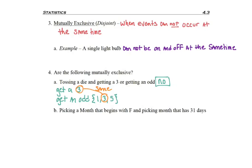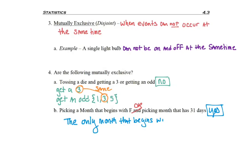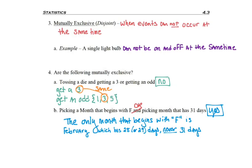In part B, the events are picking a month that begins with F, or picking a month that has 31 days. Can they happen at the same time? No — the only month that begins with F is February, which has 28 or sometimes 29 days, but never 31 days. So these two events are mutually exclusive.